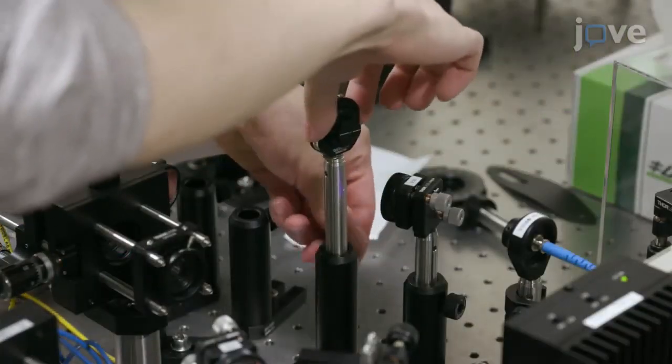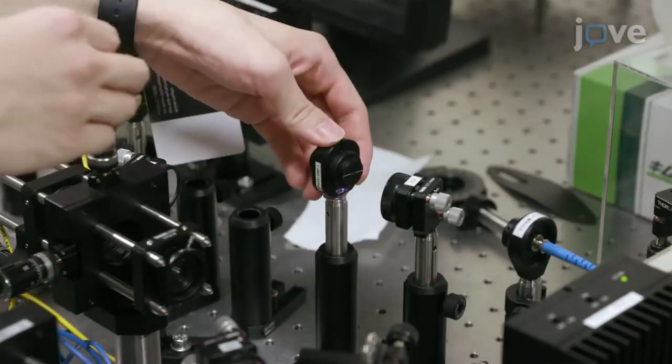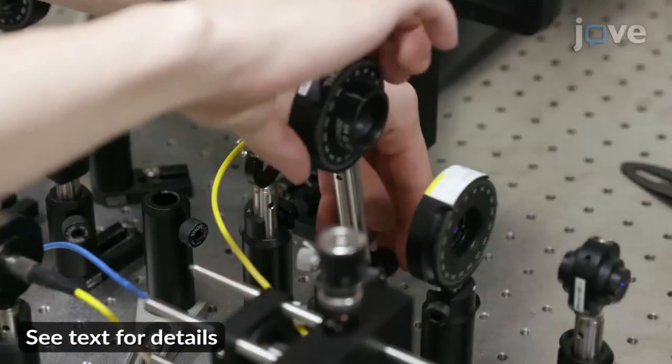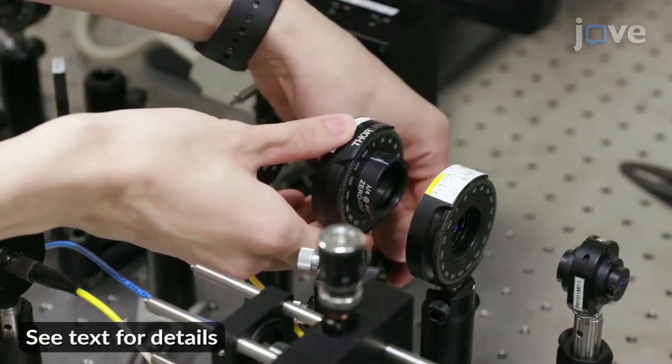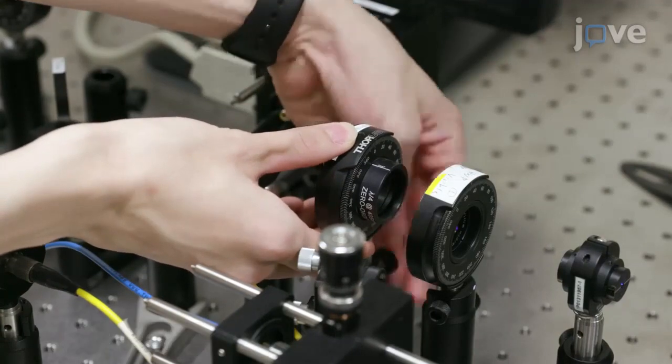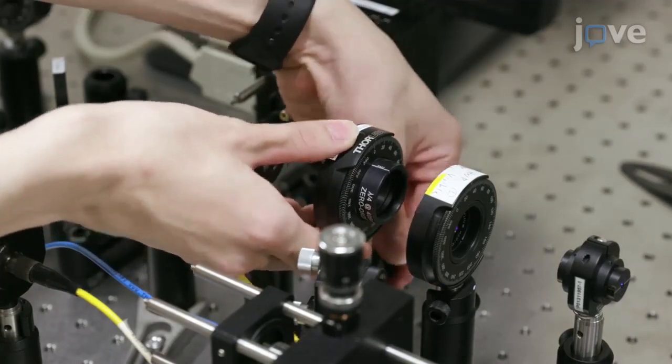Direct the laser through a free-space isolator. Then place a half-wave plate and a quarter-wave plate for 405 nm light in the path of the beam. Set the plate angles to achieve the desired beam polarization state.